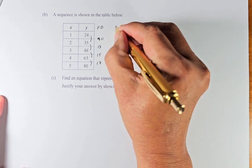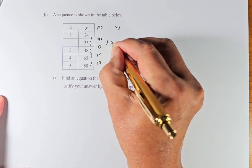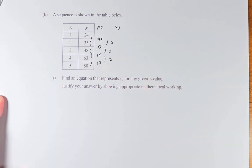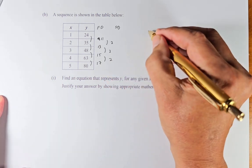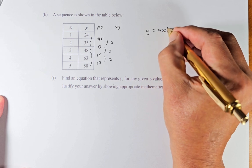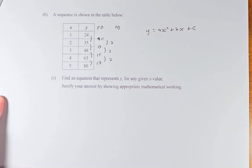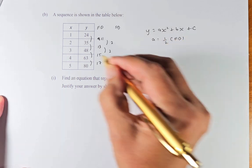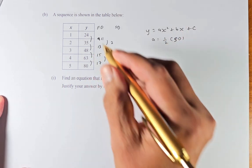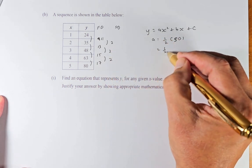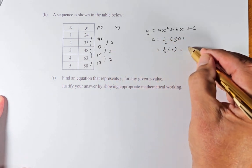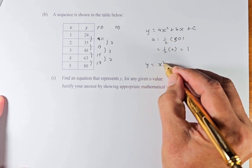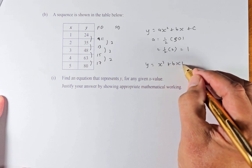Now we need to find the second difference. From 11 to 13 is 2, 13 to 15 is also 2, and 15 to 17 is 2. So the equation is y equals ax squared plus bx plus c. To get a is just half of the second difference. Because our second difference is 2, a equals half of 2, which is 1. So the equation becomes y equals x squared plus bx plus c.